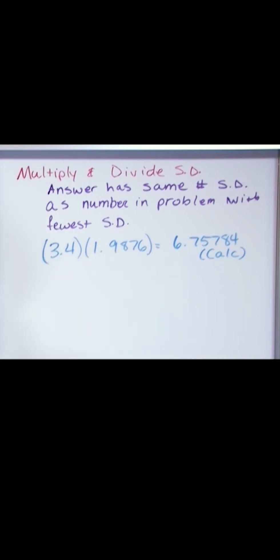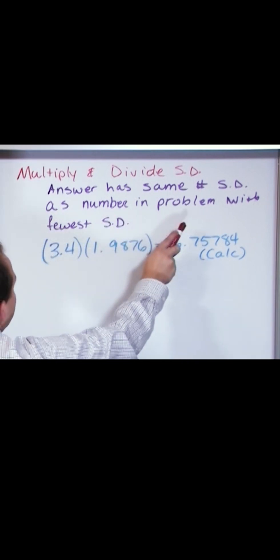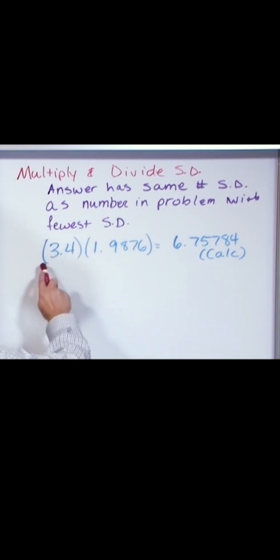How many digits do I keep? My answer given by the calculator is given by this guy, and I'm going to keep the same number of significant digits as the number in my problem with the fewest significant digits.